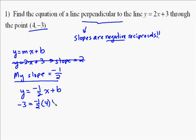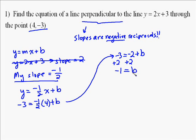Plug in the slope, then you plug in the point, so plug in -3 for y and 4 for x, and then solve for b. So you get -3 equals negative 1 half times 4 is -2. So -3 equals -2 plus b. Solve for b by adding 2 to both sides, and you end up with b equals -1.